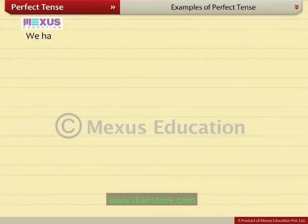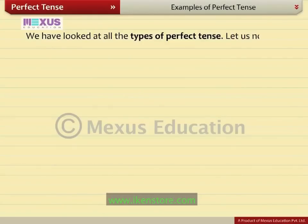We have looked at all the types of perfect tense. Let's now read some more examples.